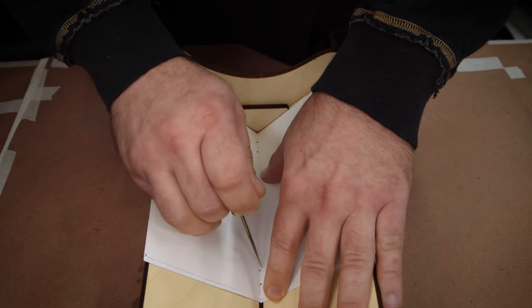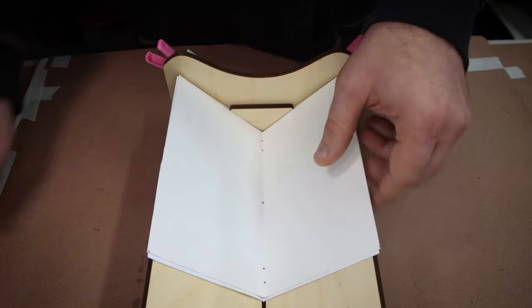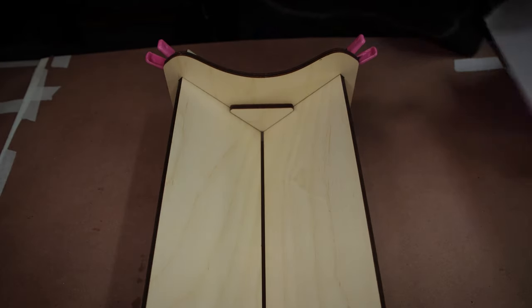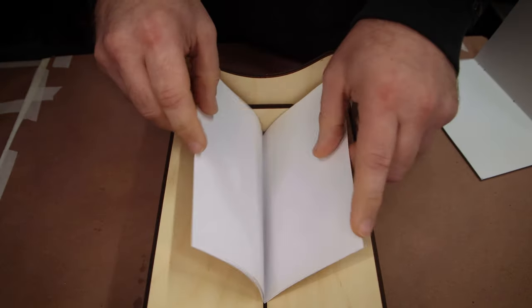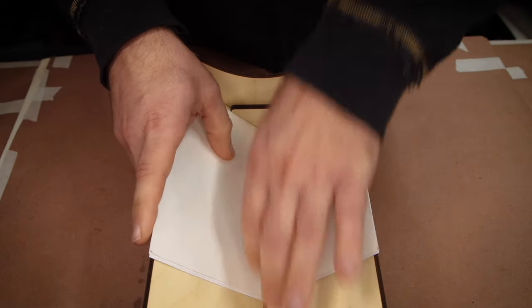To stitch them together, we need to have the holes in the same place on all the signatures. To do that, we're just going to make a template out of a piece of poster board. Just cut the poster board to the same size as your pages, fold it in half, and then we can mark our holes.